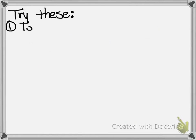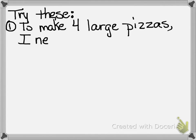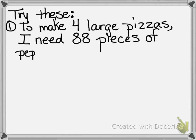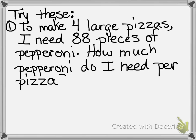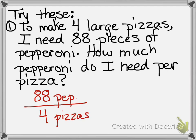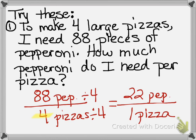Try this example: to make four large pizzas, I need 88 pieces of pepperoni. How many pieces of pepperoni do I need for one pizza? We've got 88 pepperonis over four pizzas — that's our beginning rate. We're going to divide top and bottom by four, which gives us 22 pepperonis for one pizza. So the unit rate is 22 pepperonis per pizza.